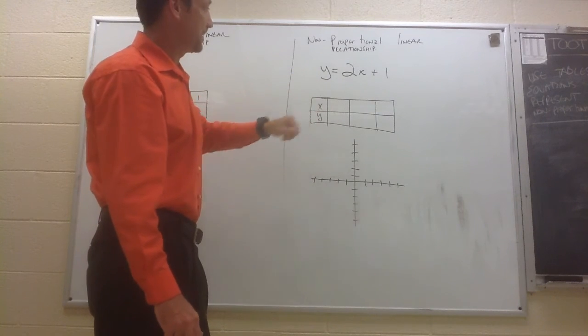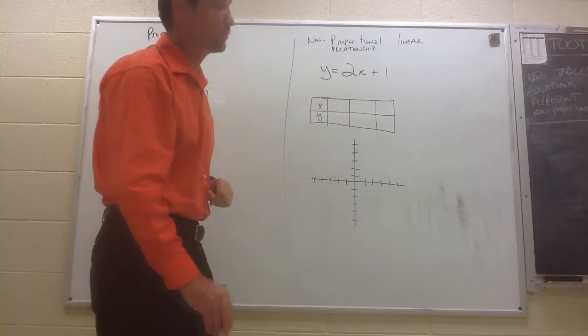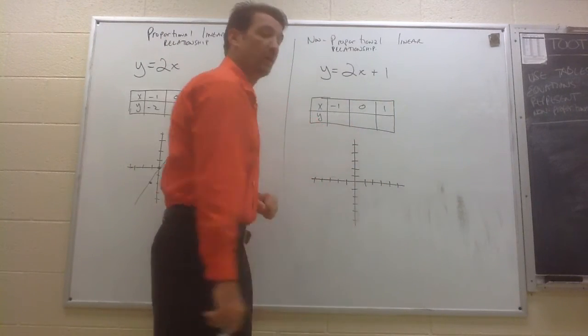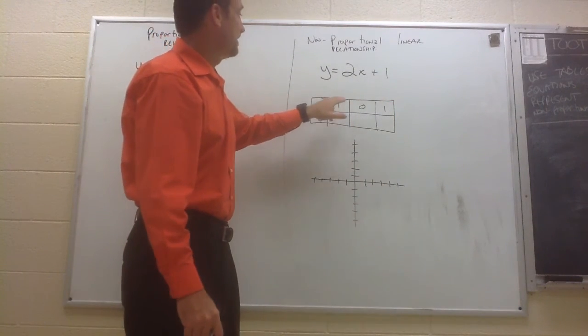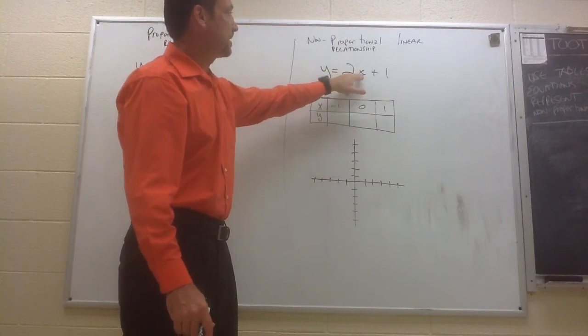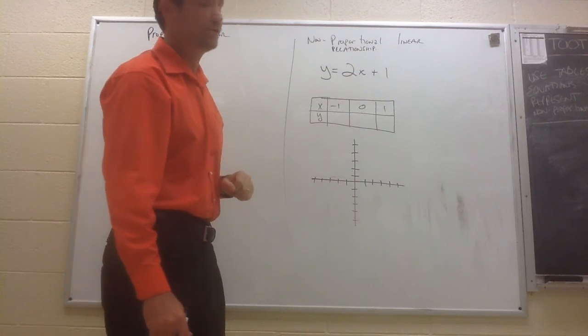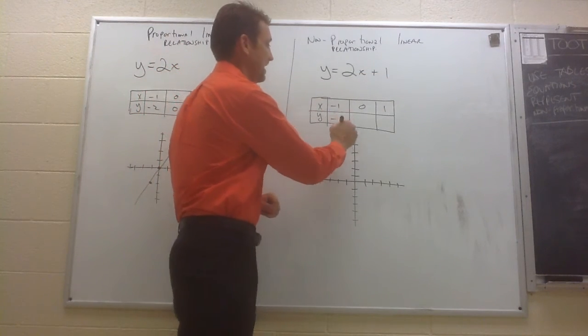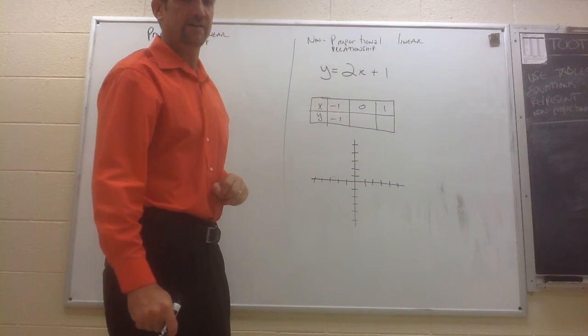Let's see what happens if we pick some inputs. Let's use the same inputs. We'll pick a negative 1, 0, and positive 1 for our x values. If I plug in a negative 1 for x, 2 times negative 1 is negative 2. Negative 2 plus 1 is negative 1. So when x is negative 1, y is negative 1.